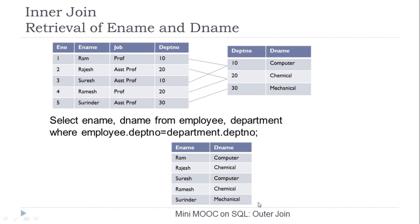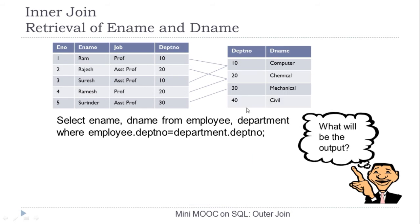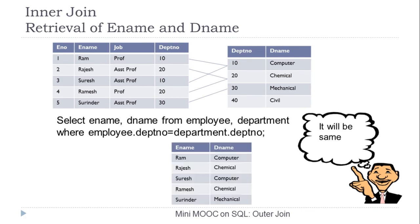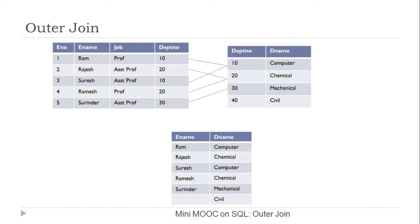That query produces five desired records — this is equi inner join. Now consider a case where we have added another record in the department table for department number 40 with dename 'Civil', and we are interested in retrieving ename and dename for each employee. Using the same inner join query, the output will still be the same five records, because department number 40 in the department table is not participating in any pair corresponding to employee table records, so it will not appear in the output.